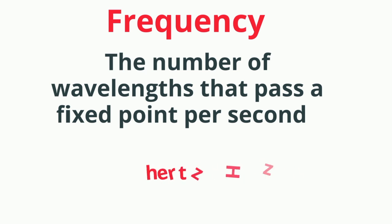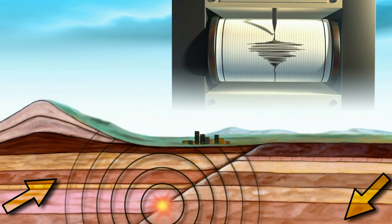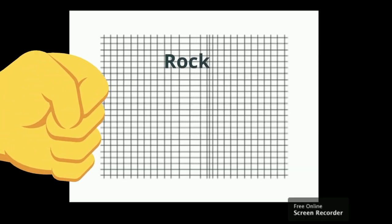Examples of longitudinal waves include sound waves and seismic P waves. P waves, just like sound waves in air, have the motion of the particles in the rocks that the waves travel through parallel to the direction of the wave.